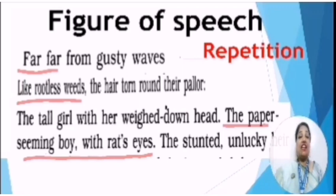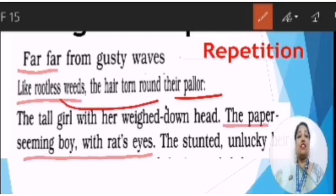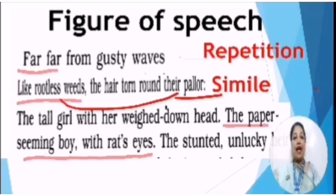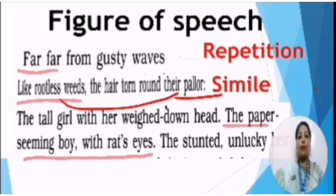In the second line, the poet has compared their pale faces — their pallor — with rootless weeds. Which figure of speech is used there? Simile. Because of malnutrition, these kids look pale, and similarly, unwanted weeds when uprooted also look pale. So the pale faces of the children are compared with rootless weeds using a simile.